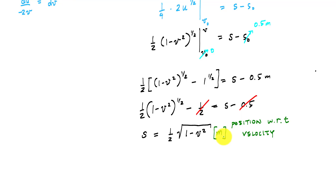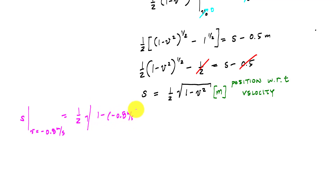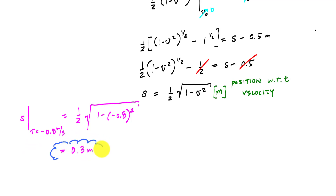With position as a function of velocity, to find the position at a velocity of negative 0.8 meters per second I just plug and chug: s equals one-half times the square root of 1 minus negative 0.8 squared. This gives a position of 0.3 meters — that's the answer to Part A.